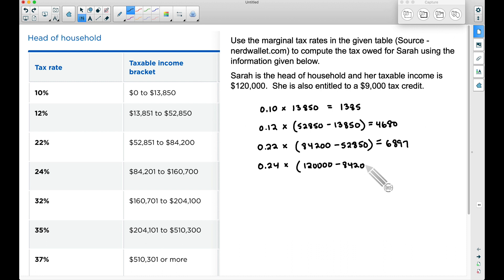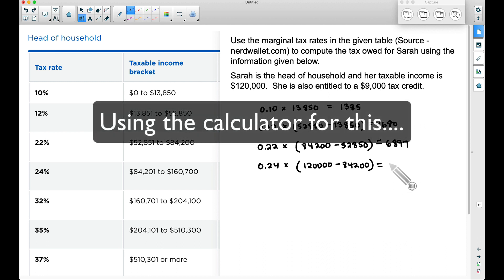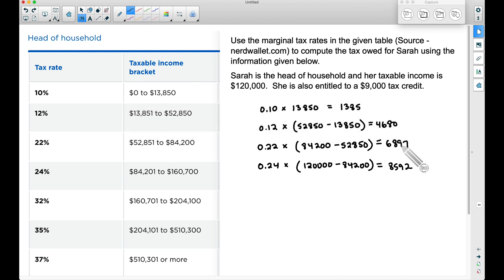Now the total amount of tax owed—we're going to take each individual amount here and add all of those together. I know I don't have them lined up, but make sure you're adding the $1,385, the $4,680, the $6,897, and the $8,592. The total sum there will be $21,554.